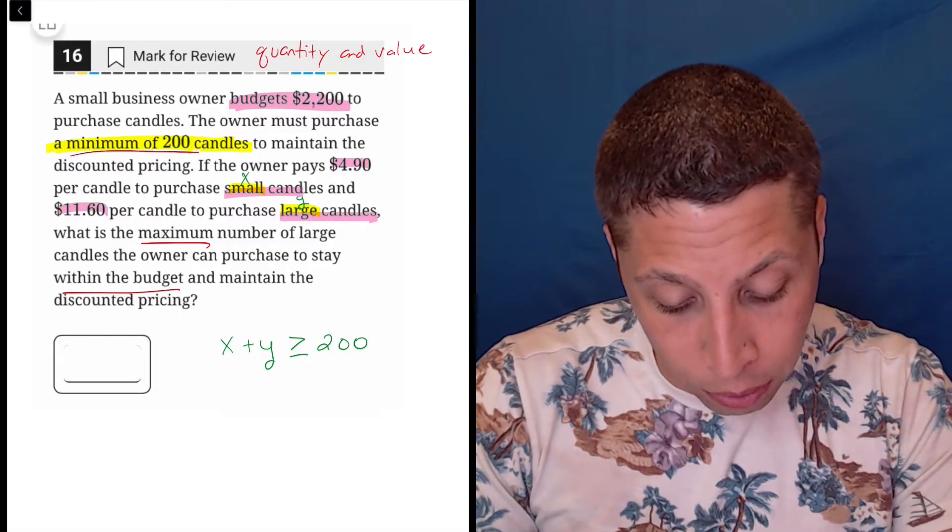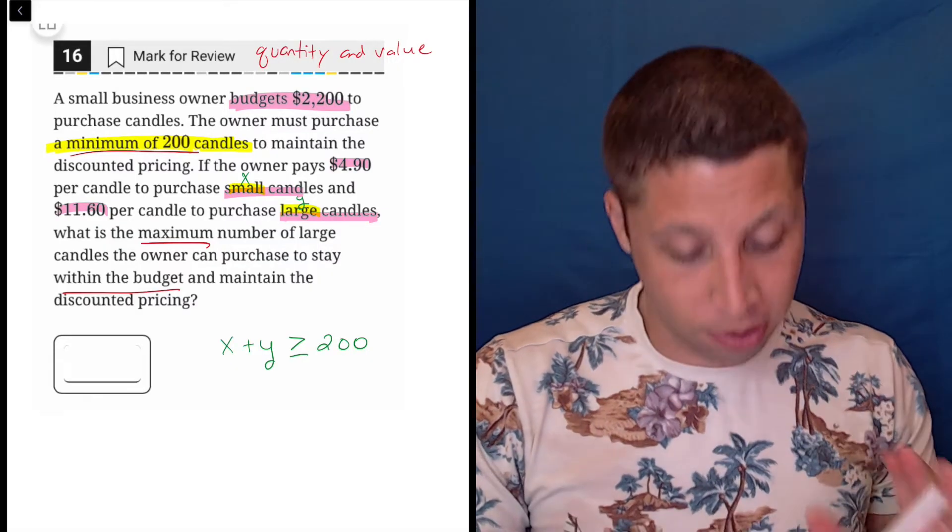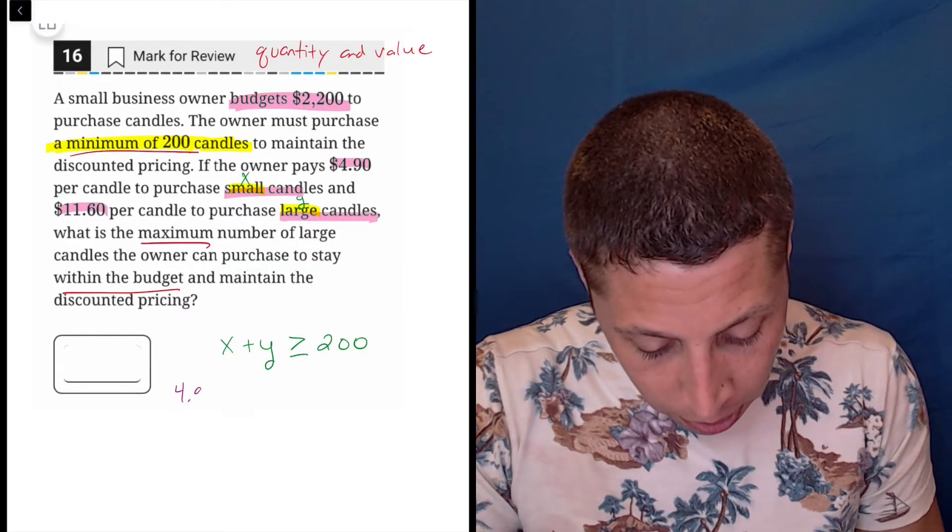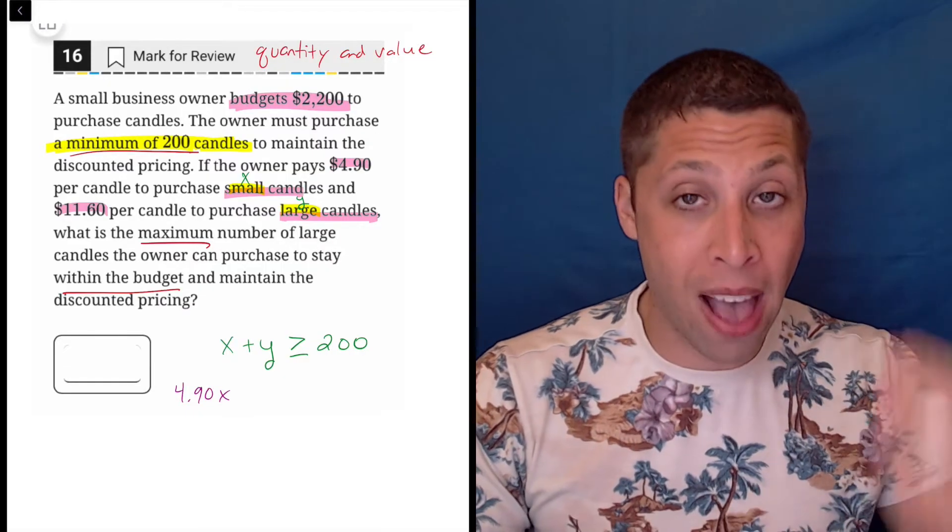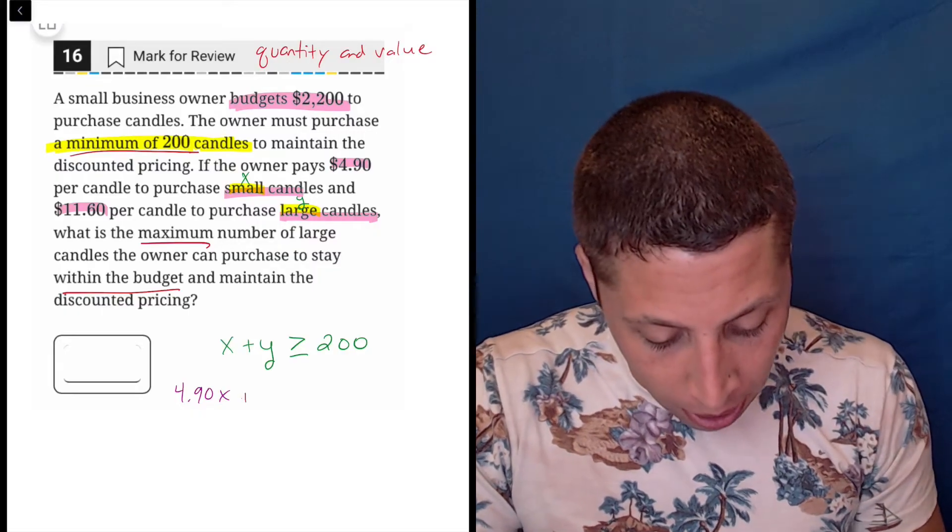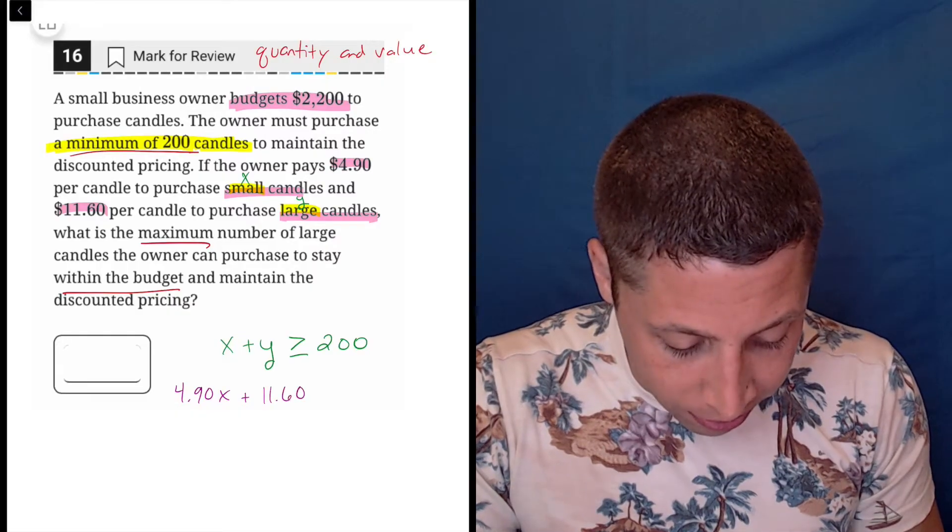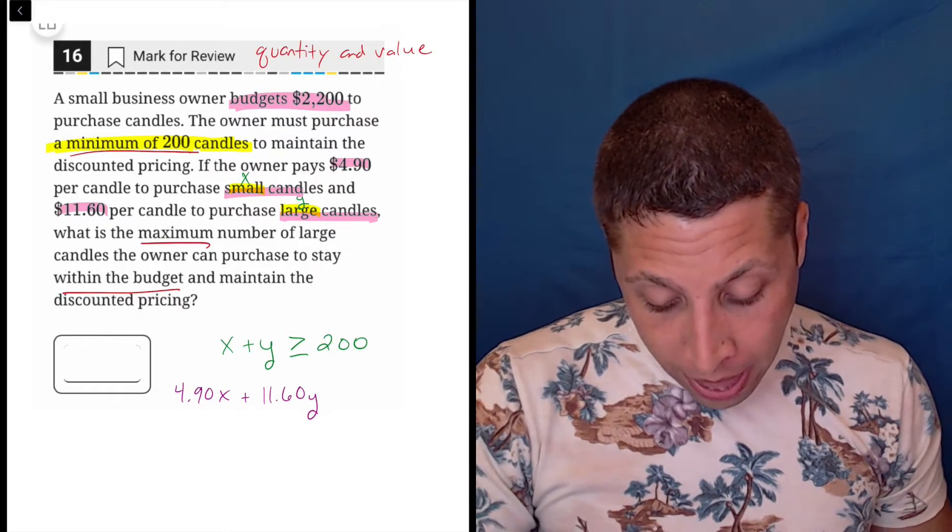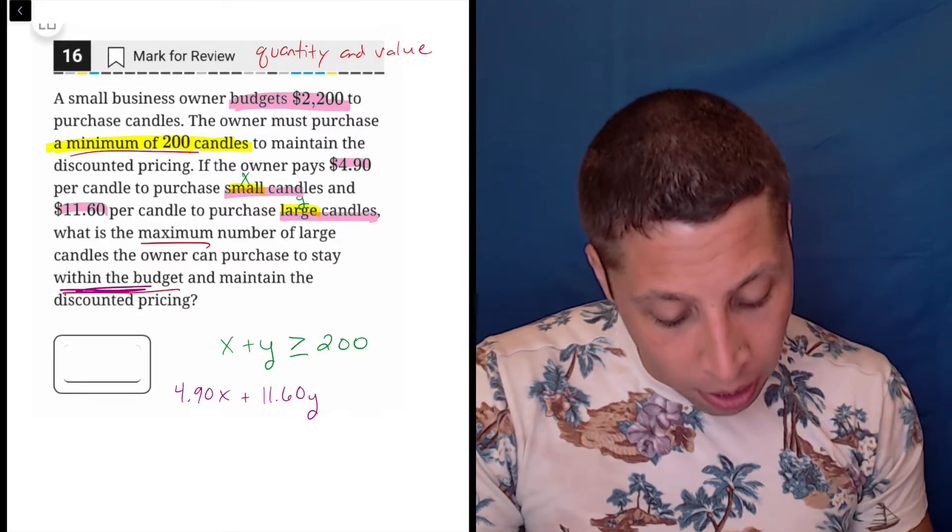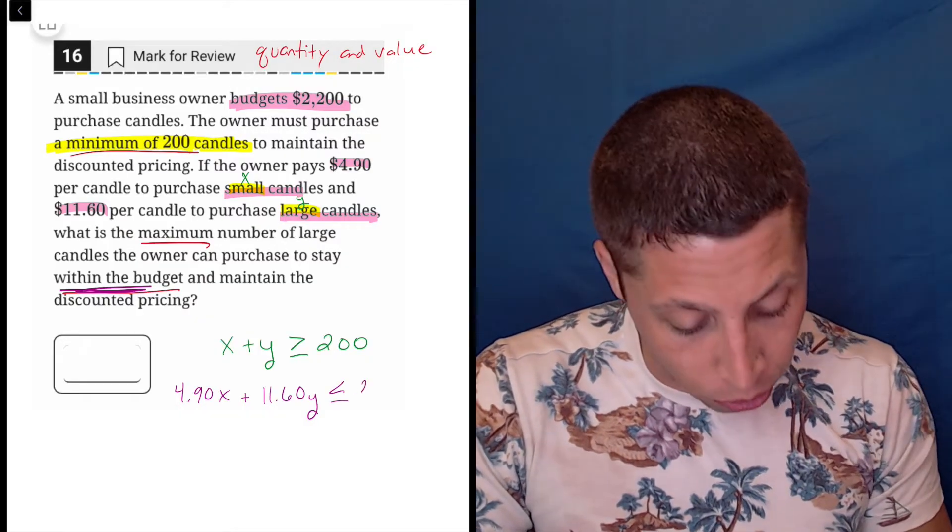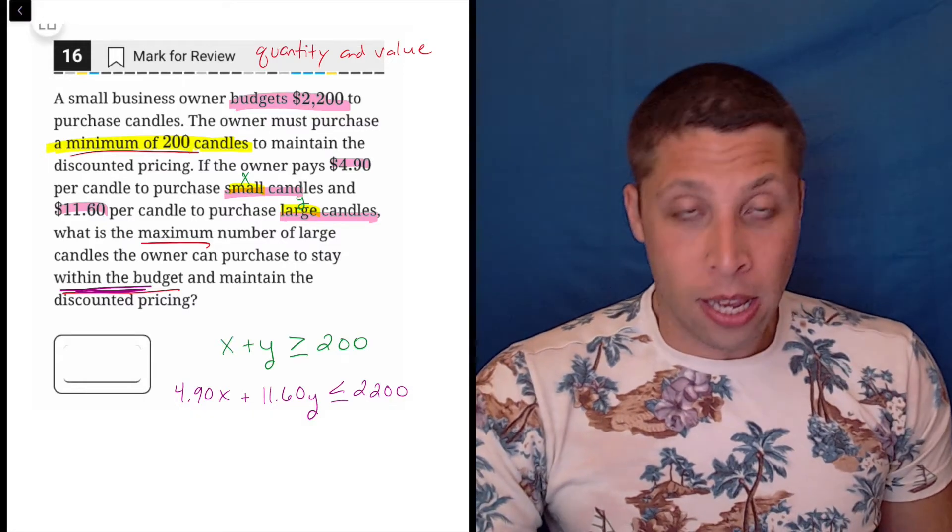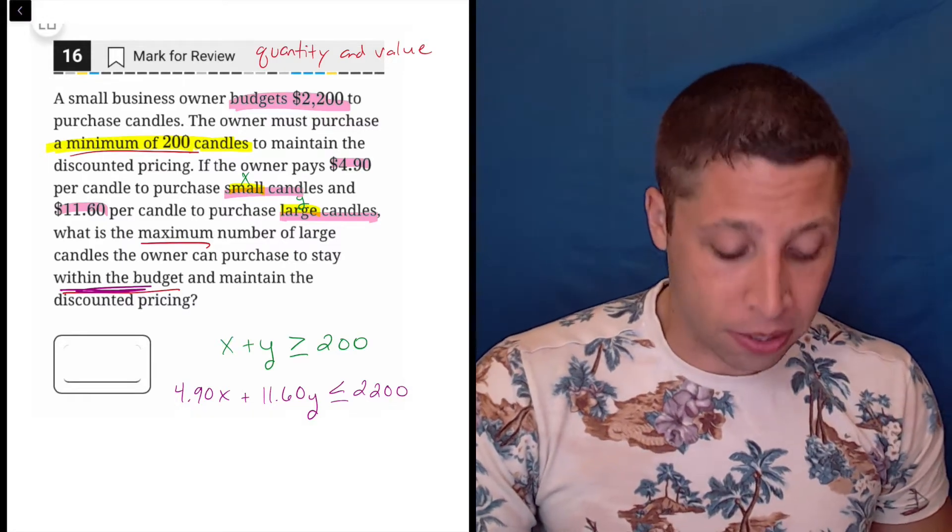And we need to have a budget of $2200. So we're going to use all of that to create another equation. So let's just, we got to be careful here. So the small candles I said were X. So we're going to do 4.90X, right? The value gets multiplied. Each candle is going to multiply the 4.90 by another number, plus 11.60 times Y. And then we want to stay within the budget, right? So we want to be under, less than or equal to 2200. So this is tricky, even coming up with these inequalities.